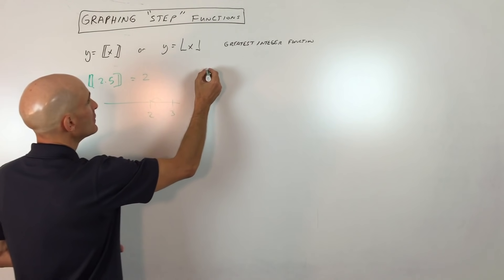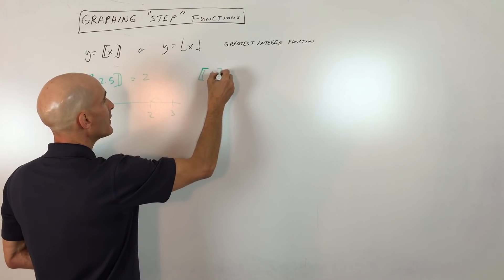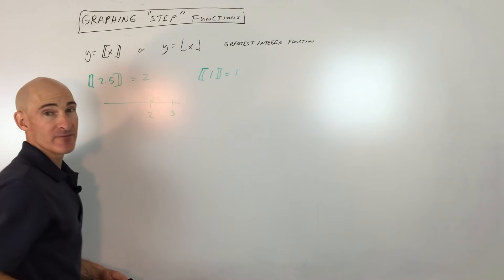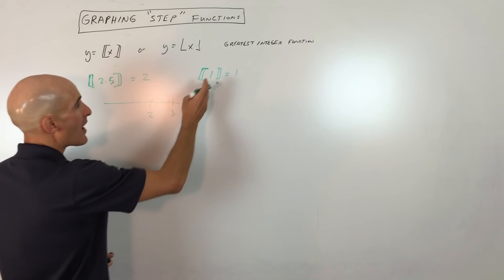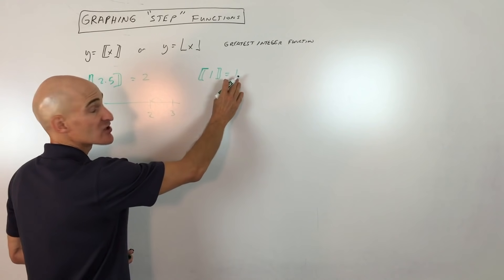Now, if you wanted to figure out what this is, let's say the greatest integer of 1, well, this would just still be 1. So it just rounds down to the next integer. But if it's already an integer, it's going to stay that value.